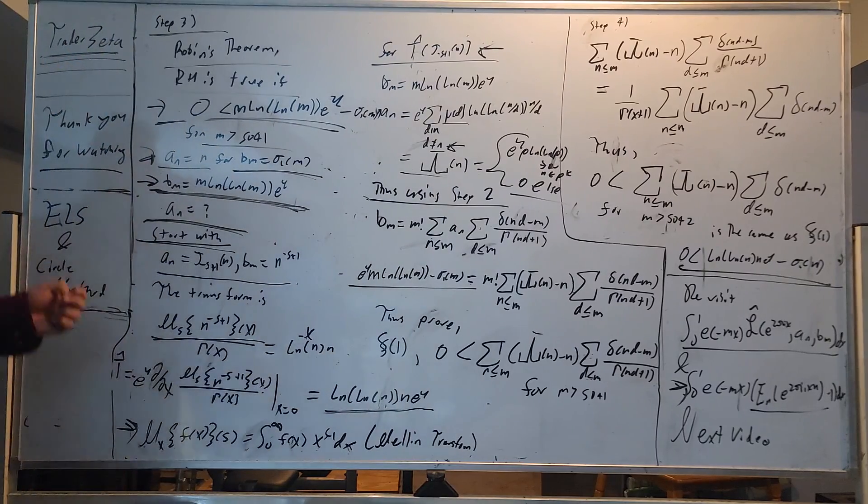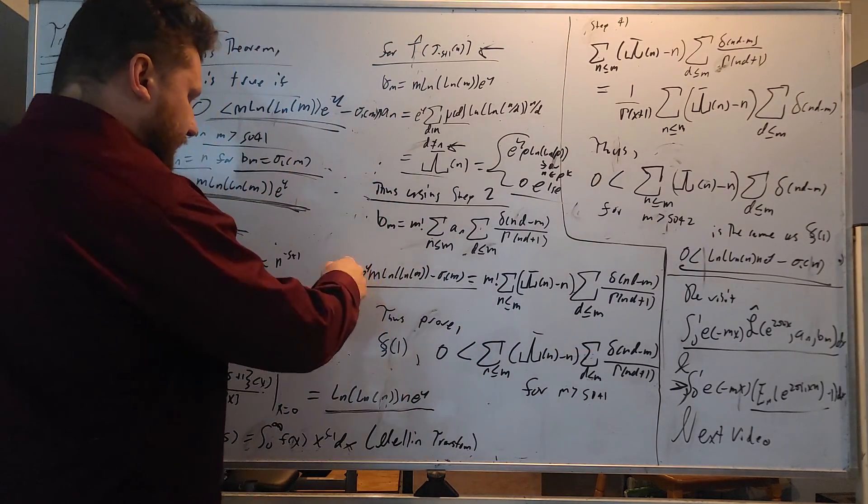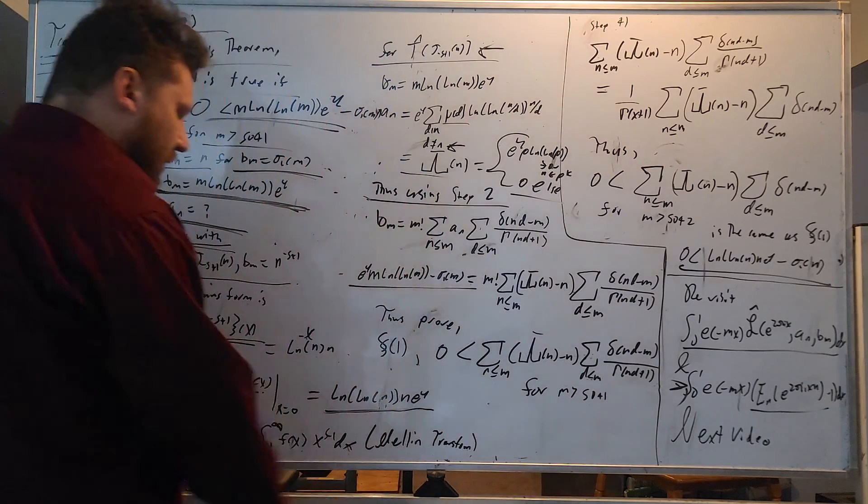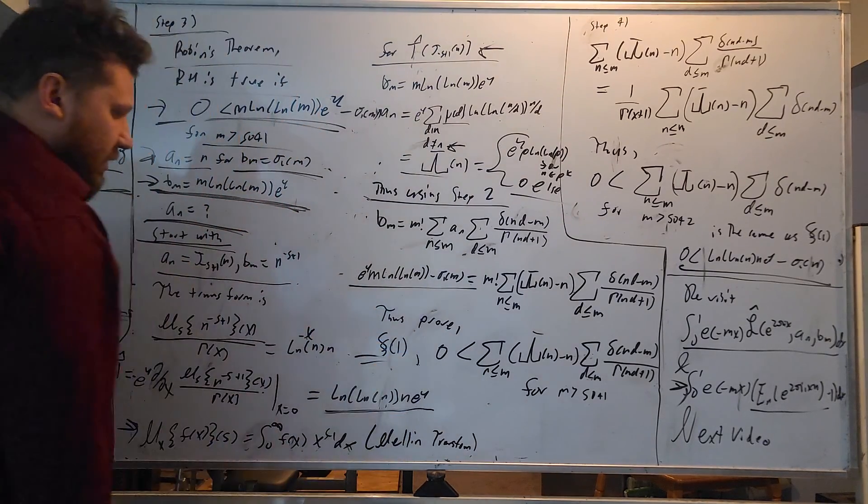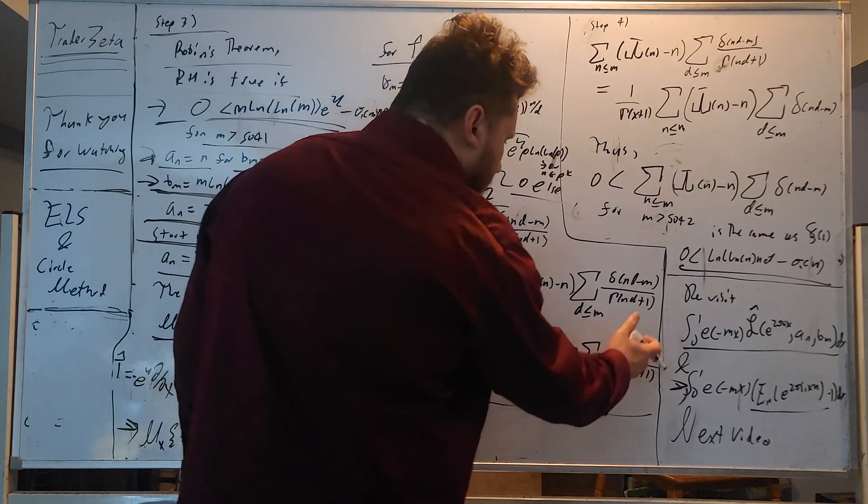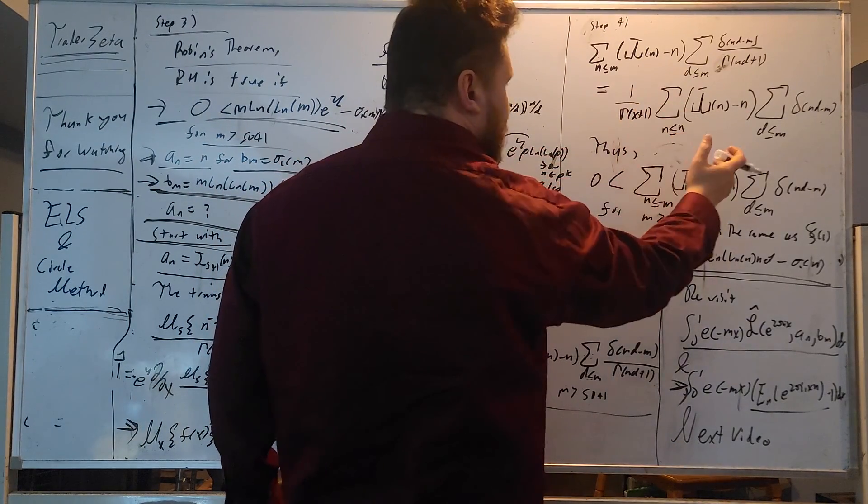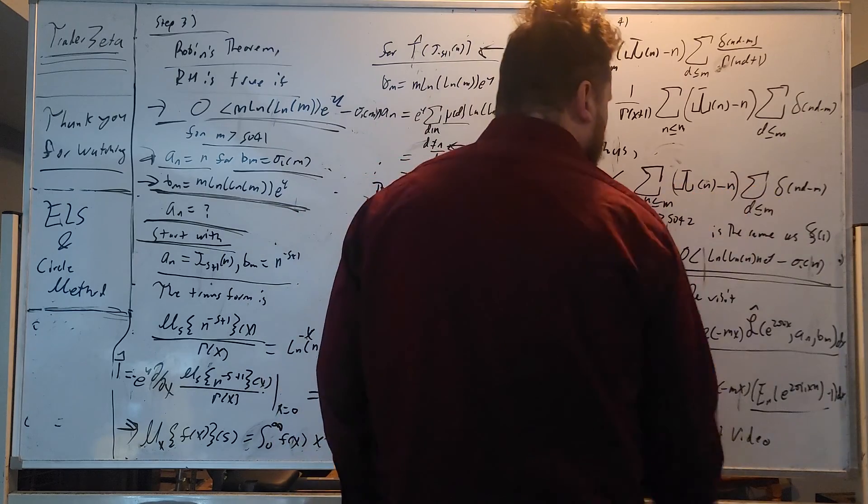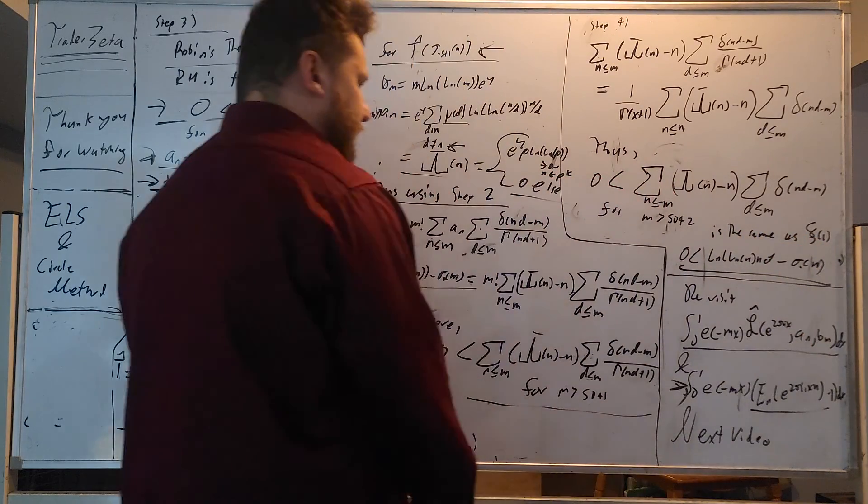The Jordan totient function, once again, it was on the other side, but I'll rewrite it. So d divides n, you have mu of d, and then you have n over d to the s. This equals a Jordan totient function. And what we can do is we can use this definition of things. We can plug in a negative s plus 1. And the Möbius inversion formula is going to give us n to the negative s plus 1.